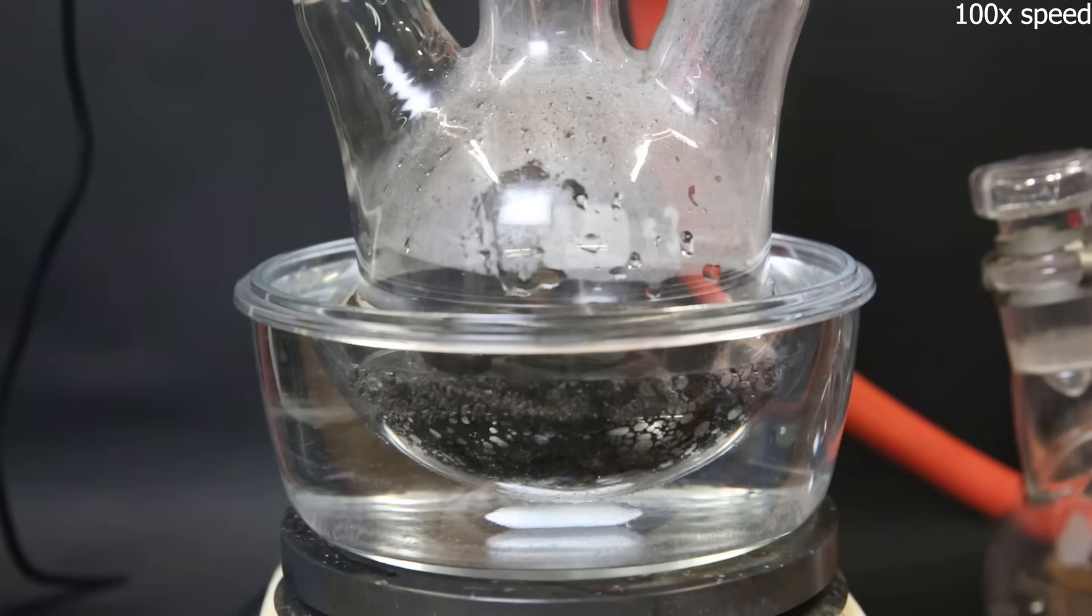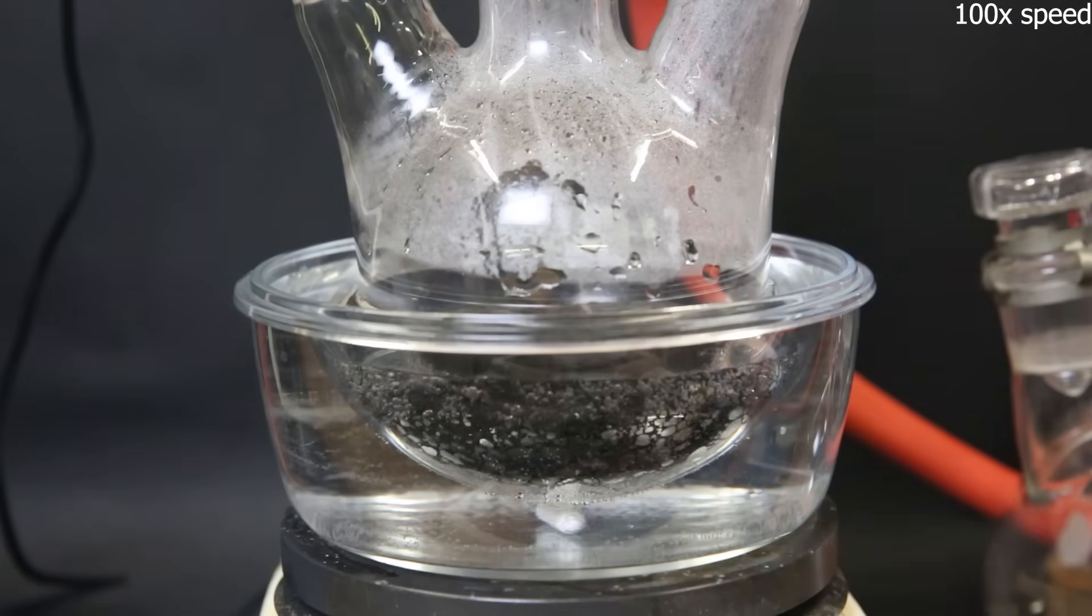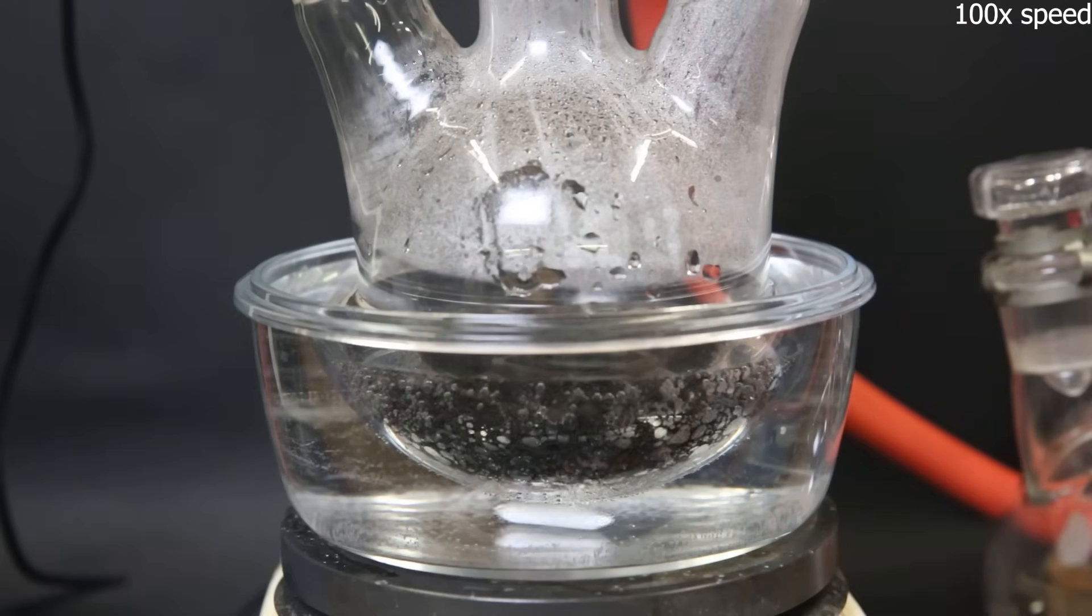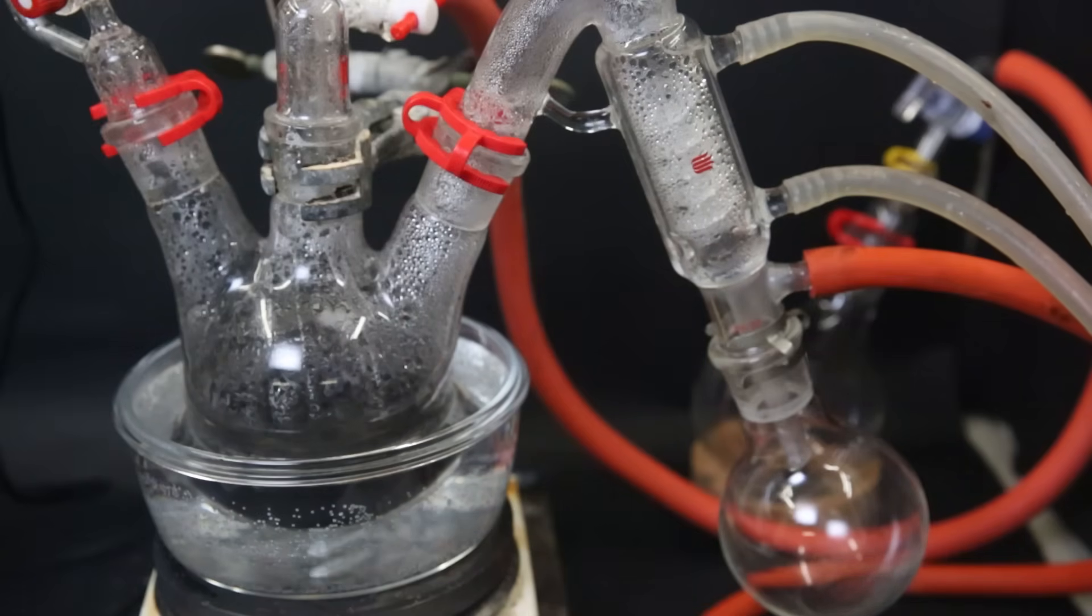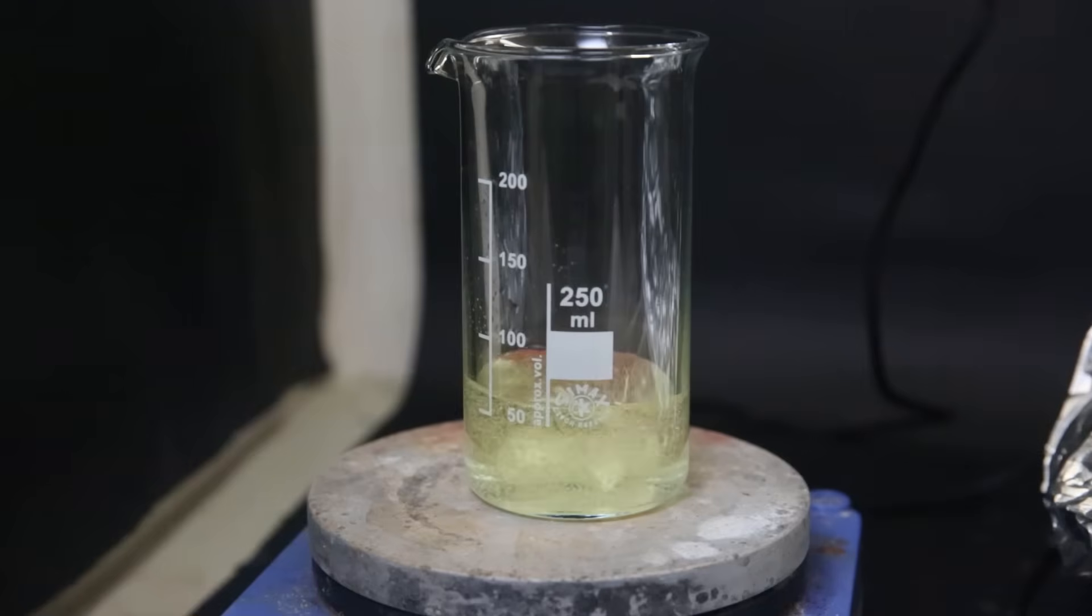We can see the nickel powder is releasing hydrogen and the water starts to boil. After a while, the danger of it suddenly releasing a lot of hydrogen has pretty much gone away. So I remove the gas adapter on the right and replace it with a short path vacuum distillation setup to more easily boil off all of the water.